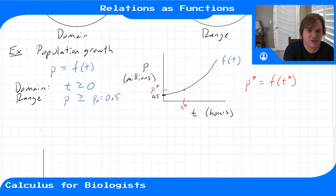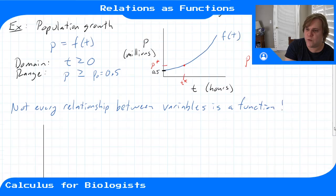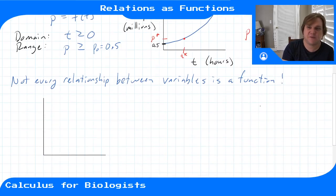So not every relationship between variables is a function though. There are plenty of situations where your variables are related in some way that can't be described by a clean function, a clean one-to-one function. So you could have something like this: X, Y, and the relationship looks like this.